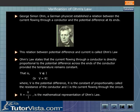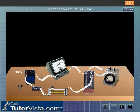Shown here is a circuit with a suitable voltmeter for measuring the potential difference V across a resistance box, and a milliammeter for measuring the current I flowing through the resistance box. A rheostat is used for varying the current and potential difference in the circuit.